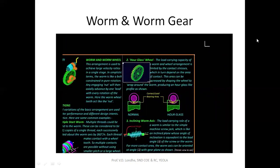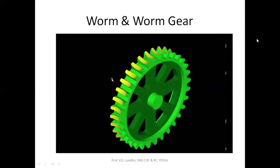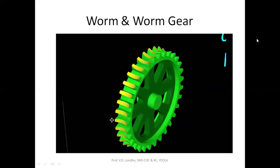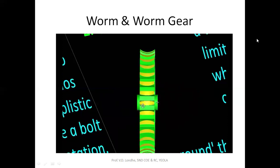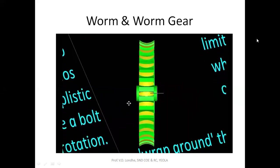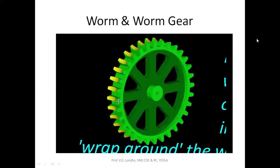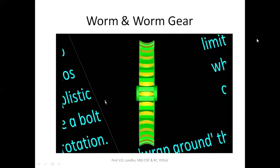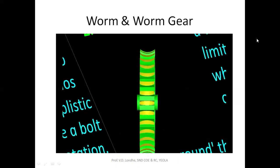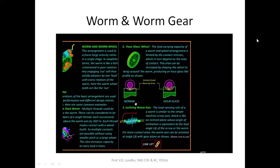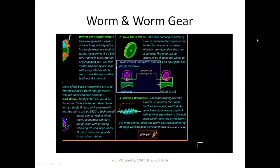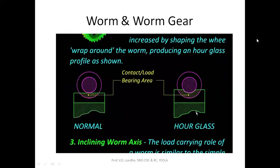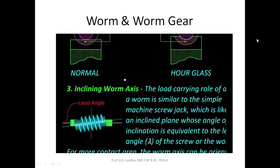Here is another variation done to increase load-carrying capacity. The worm wheel has its periphery cut in an hourglass-like fashion — this is called an hourglass worm wheel. Because of this shape, the contact area between the worm and the worm wheel is stepped up. Looking at this arrangement in cross section, on the left is an ordinary arrangement and on the right is the hourglass arrangement — you can see there is additional contact area, allowing additional load-carrying capacity.